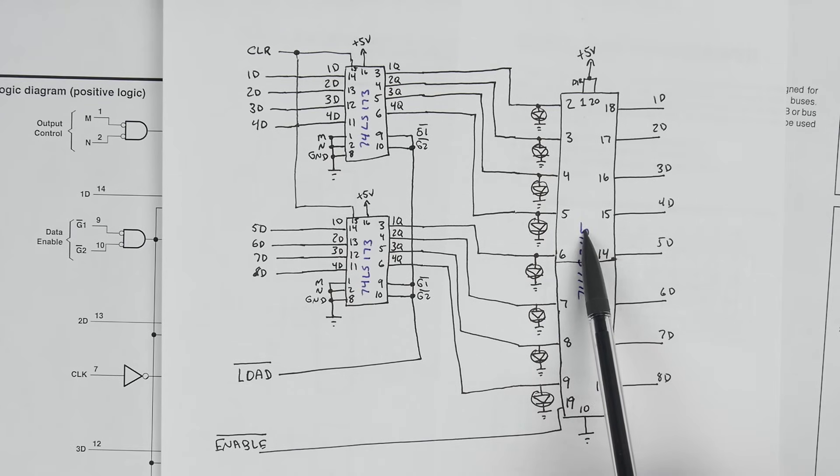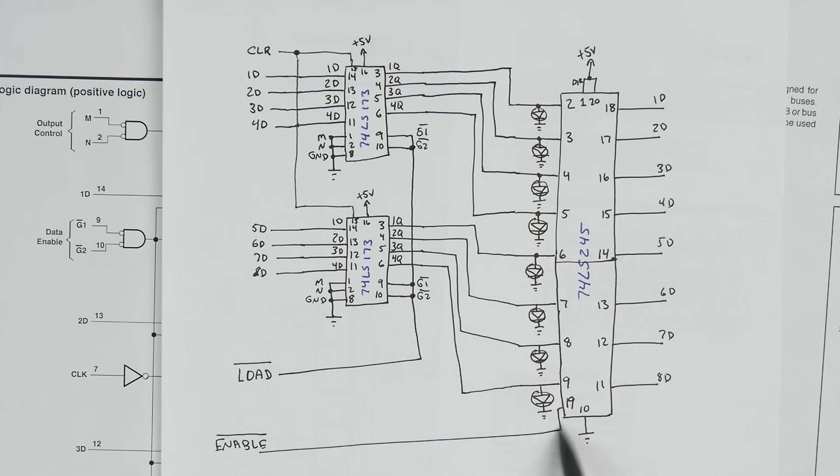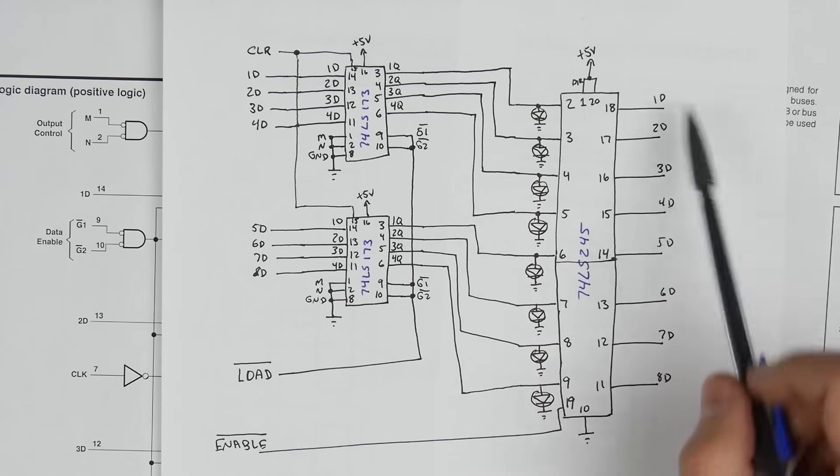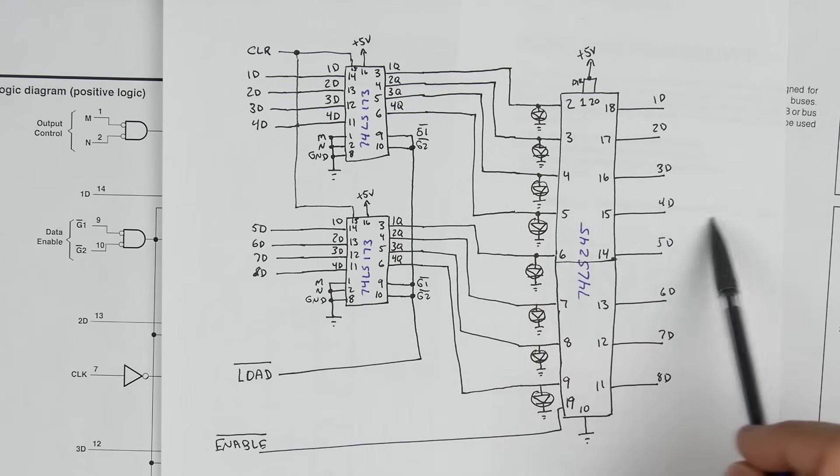And then we're using the 74LS245 to actually control whether it goes back out on the bus or not. And so there's an enable line that the 74LS245 has, and it's an inverted logic line. So it would normally be high, and then you bring it low to enable it. And then when you bring that low, then we'll see whatever this is will actually get output. But if the enable is high, meaning it's not enabled, then this is essentially shut off, and it's not outputting a zero or a one to the bus.